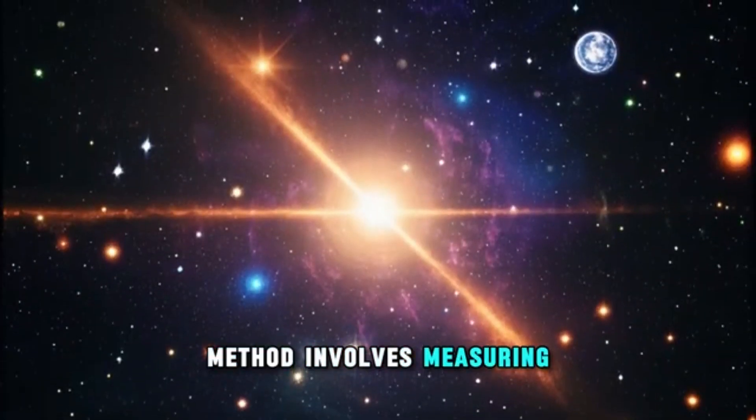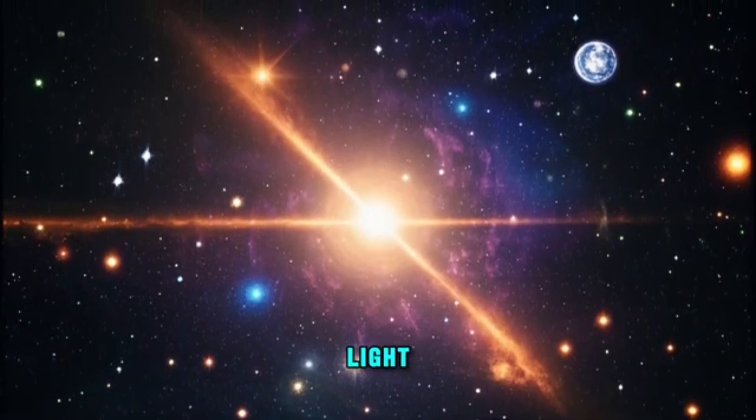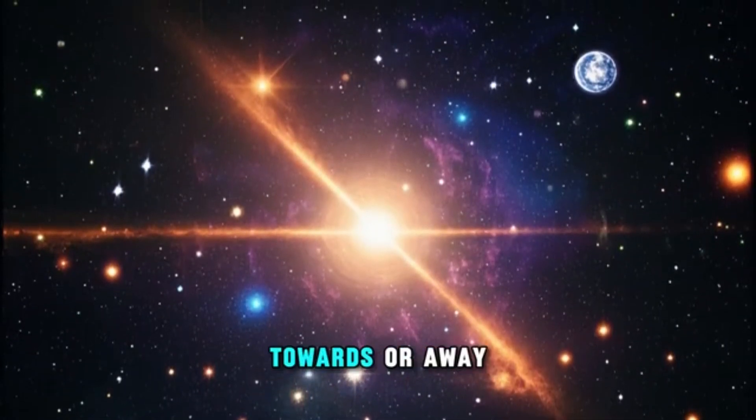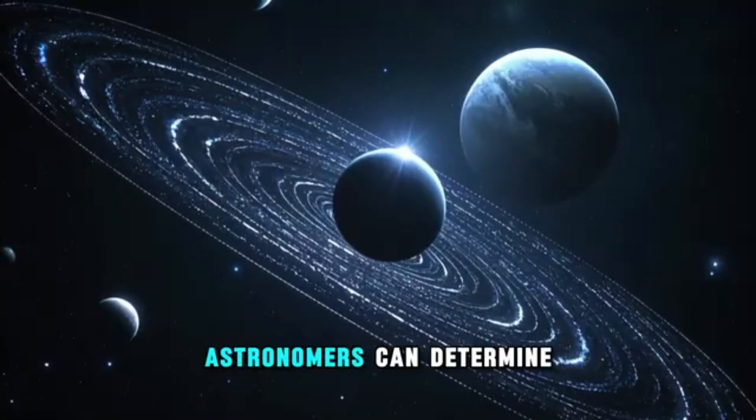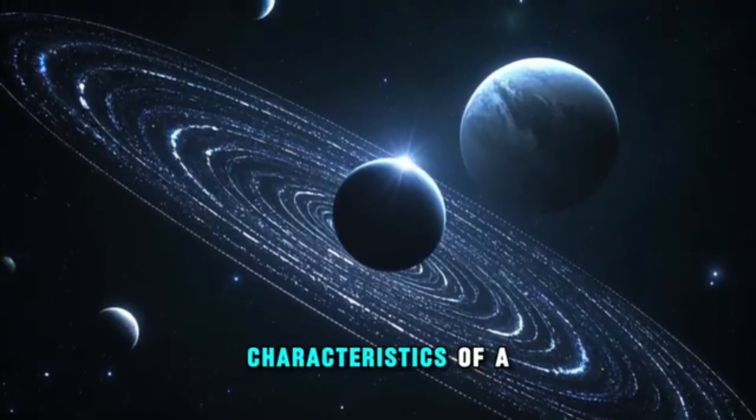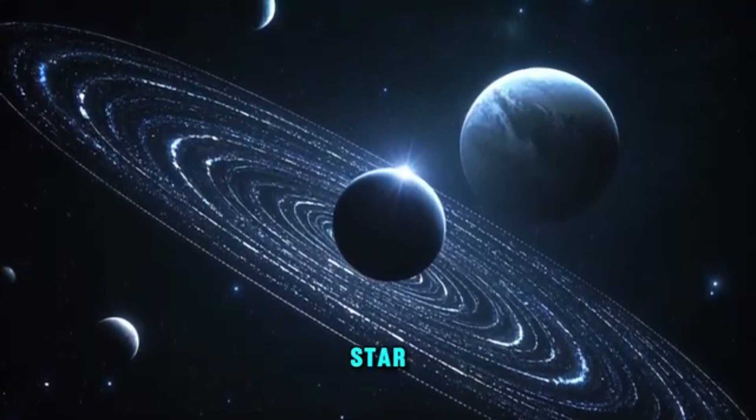The radial velocity method involves measuring the Doppler shift in the star's light, which occurs when the star moves towards or away from Earth. By analyzing the frequency of these shifts, astronomers can determine the presence and characteristics of a planet orbiting the star.